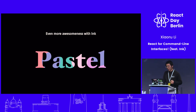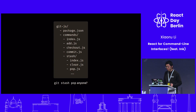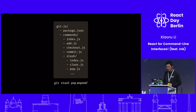Another thing is that we have a framework based on Ink called Pastel. It kind of works like Next.js — we can use the file and project structure to define subcommands. In a Next.js app it would be routes, but here we're dealing with subcommands. So for example, if we want to make something similar to a Git app, we can just structure our project like this.